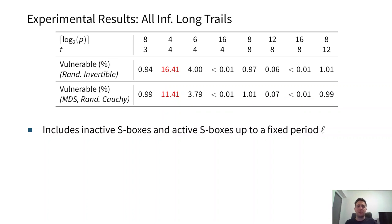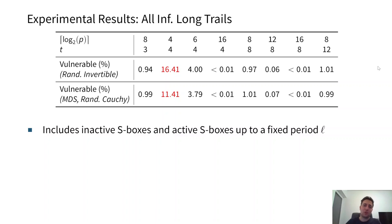Including all results from the paper — infinitely long invariant trails, iterative trails, both inactive and active S-boxes — we see around 16% of matrices are vulnerable for smaller fields. As the field size increases, the percentage of a matrix being vulnerable gets quite low, though still higher than individual cases since we consider all results combined.